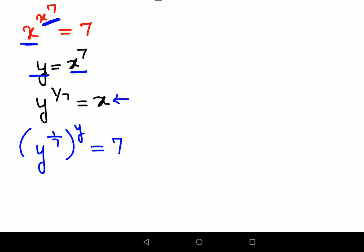Now another thing you need to remember: (a^m)^n = a^(mn) = (a^n)^m. Since multiplication is commutative, I can shift the numbers from outside to inside the bracket. Using the same logic, I can write (y^y)^(1/7) = 7.